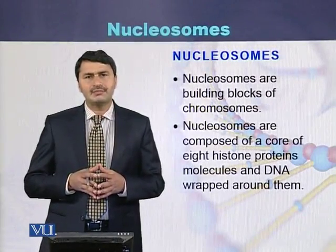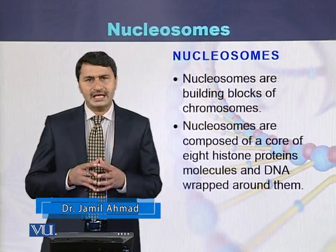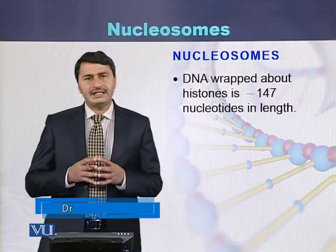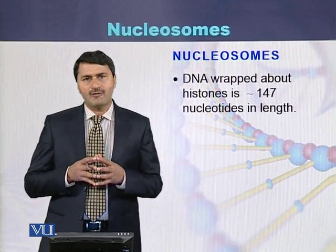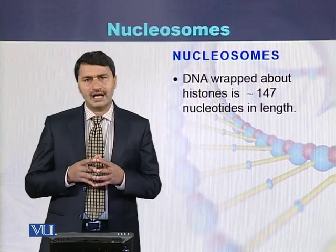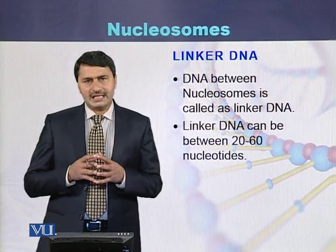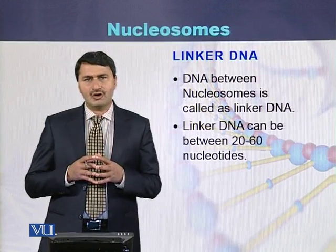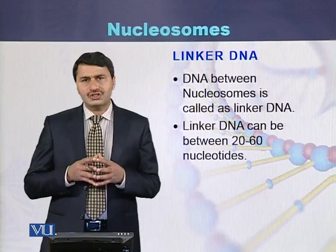Nucleosomes are called the building blocks of the chromosomes. Nucleosomes are made up of DNA which is wrapped around 8 histone molecules. The DNA wrapped around the 8 histone molecules is approximately 147 nucleotides in length. The DNA present between 2 nucleosomes is called linker DNA, and the size of the linker DNA varies from 20 nucleotides up to 60 nucleotides.